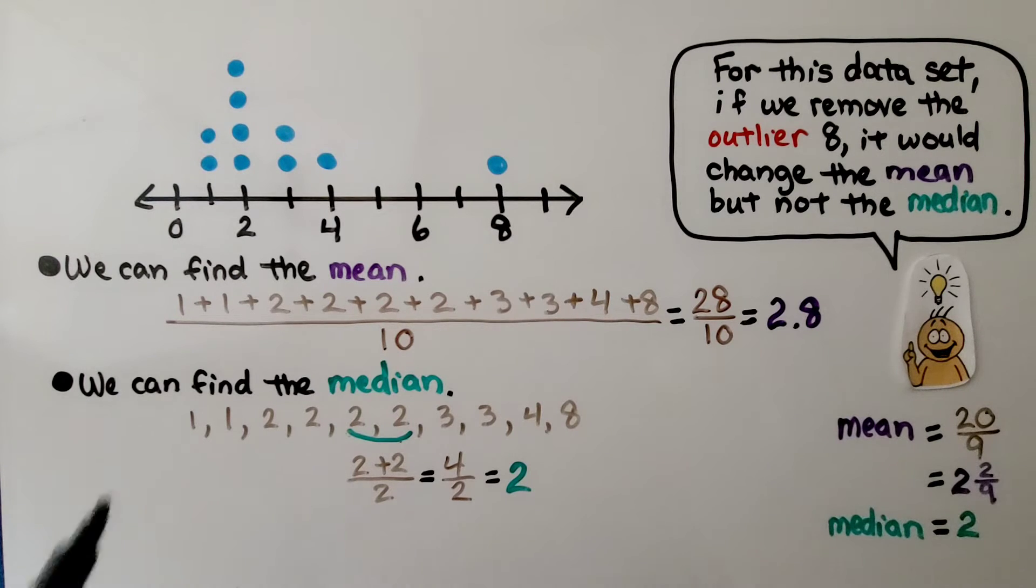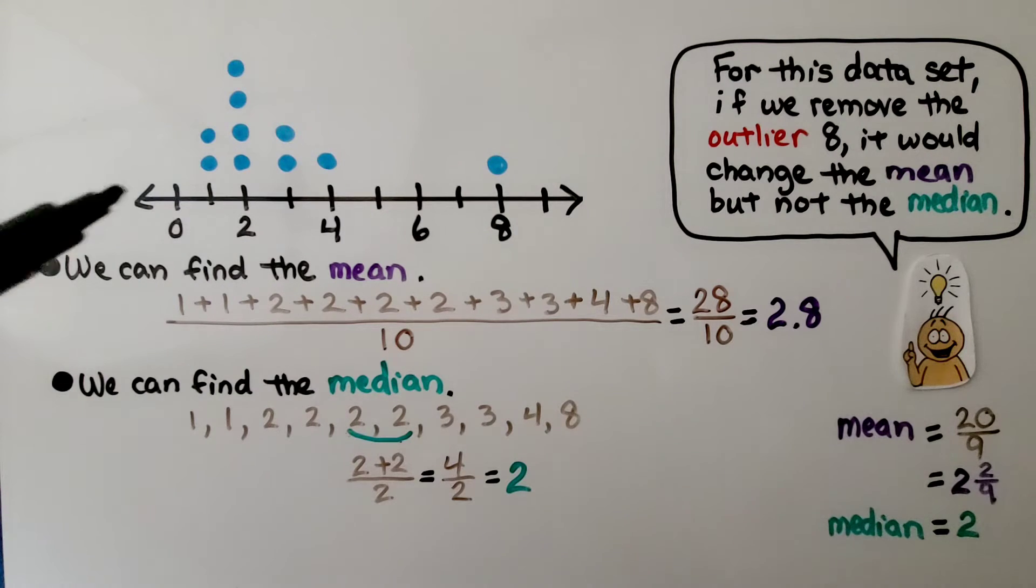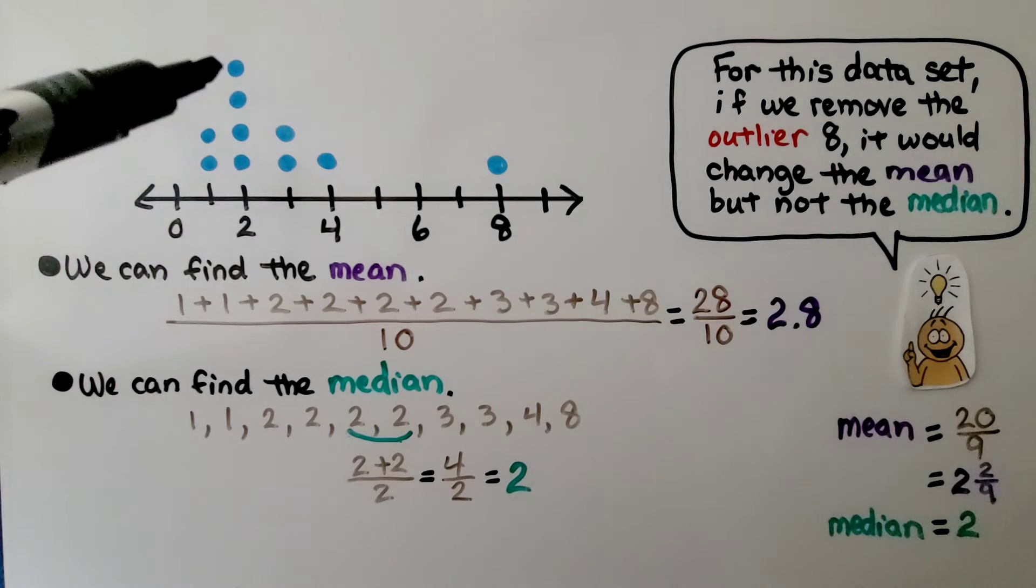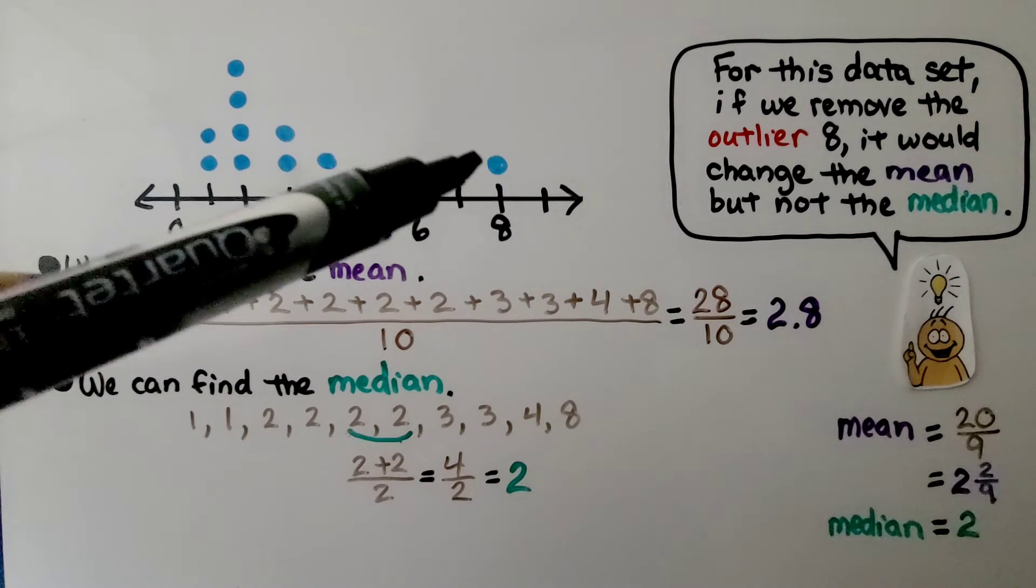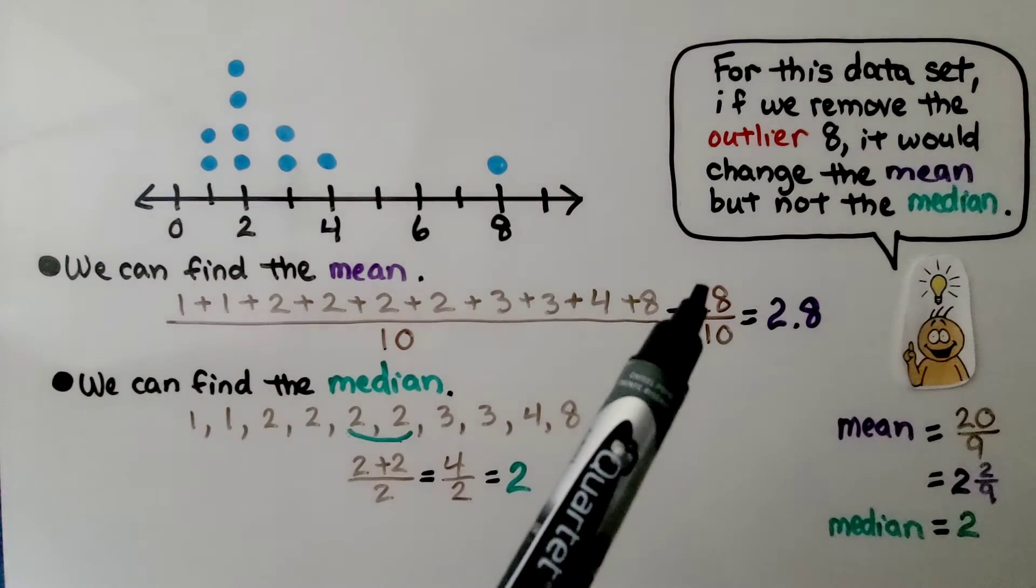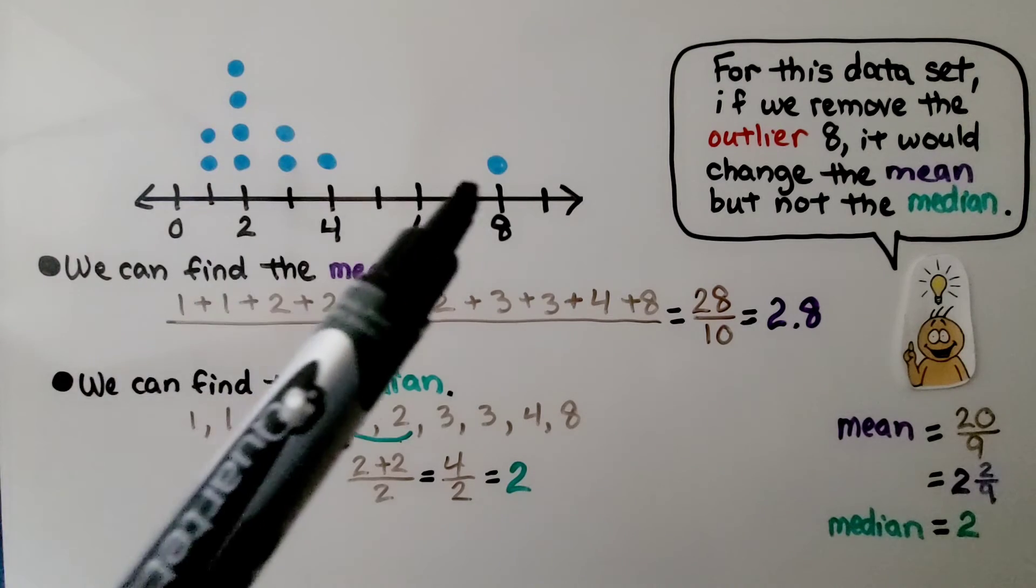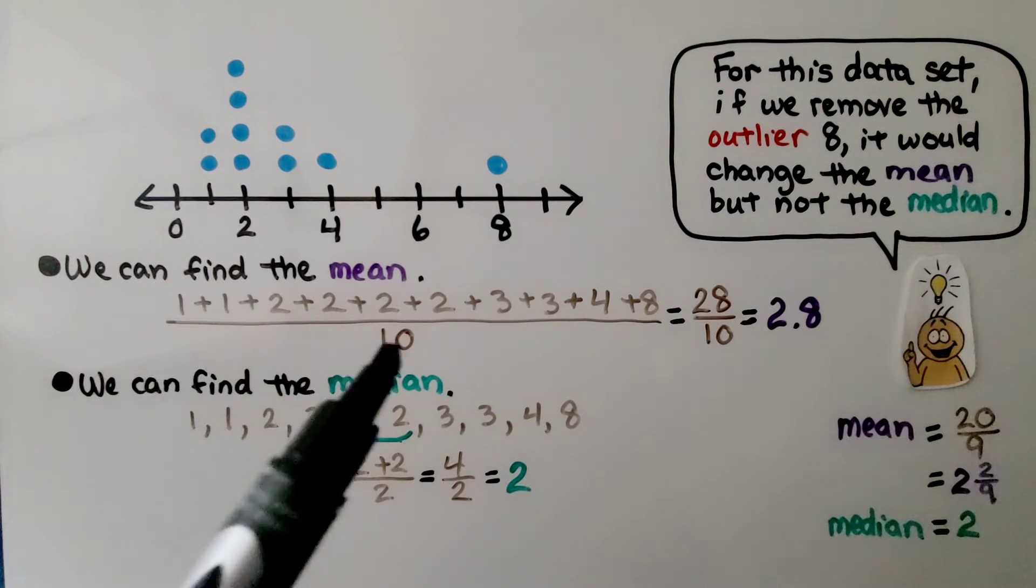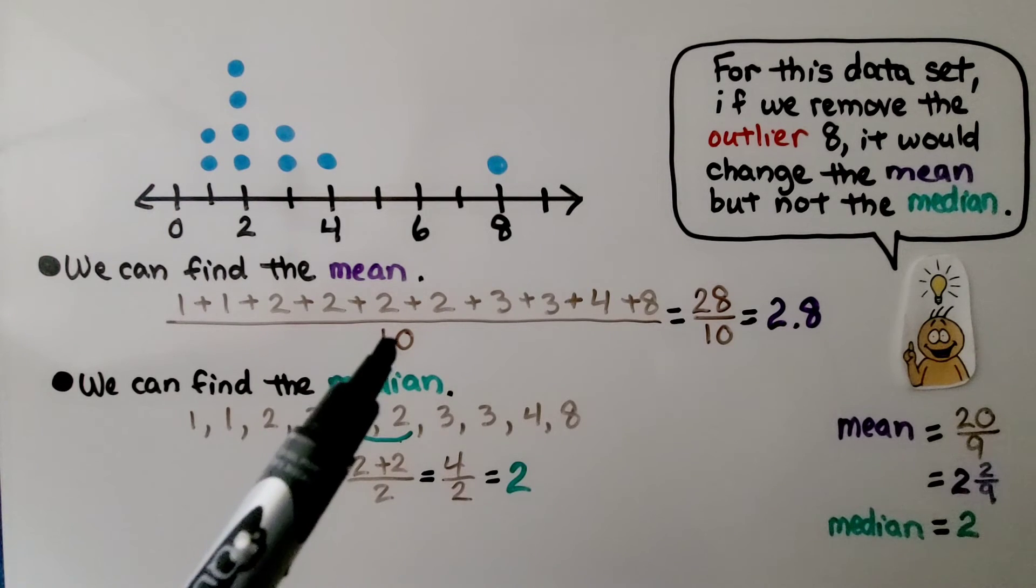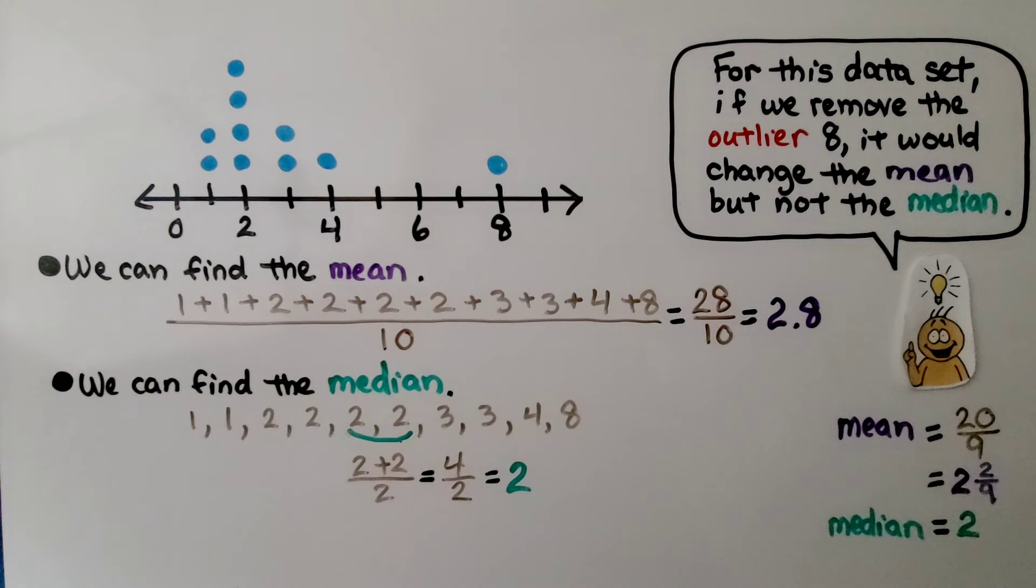Look at this dot plot. Now they're all on the left side. We can find the mean. We know that's a 1, and we have a 1 and a 1. We know we have some 2's. We have a 3 and a 3, a 4, and an 8. We add them all up and we get 28, and there are 1, 2, 3, 4, 5, 6, 7, 8, 9, 10 data points. So, to find the mean, we add them all up and divide by the number that we added, which is 10. We get 28 tenths, which is 2 and 8 tenths.